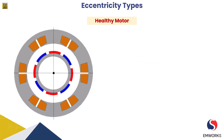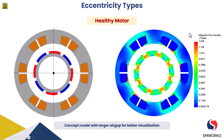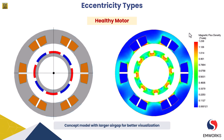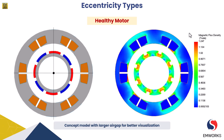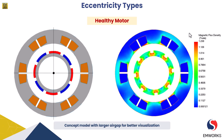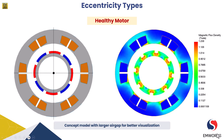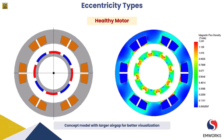Let's go through the types of eccentricity before we discuss the case studies. Here we can see a healthy motor where the rotor is perfectly centered within the stator core and the rotation axis is concentric. We have increased the air gap for better visualization. In the magnetic flux density plot, each tooth experiences a balanced magnetic field; however, this is not the real-life scenario — with any manufacturing error, we could have eccentricity.